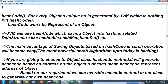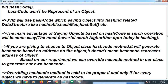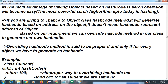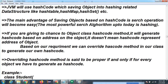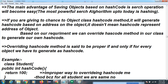The hashCode is used when saving objects into hashing-related data structures. In the collection, Set internally works on a hashing algorithm — hash table, hash map — and the main advantage of saving objects based on hashCode is that the search operation becomes very easy. Hashing is the most powerful search algorithm today. The hashCode is generated based on the address of the object, but it does not represent the actual address — it is just a number.